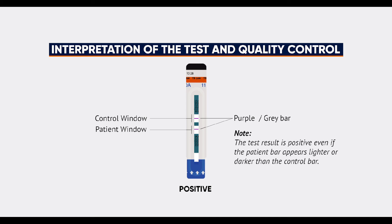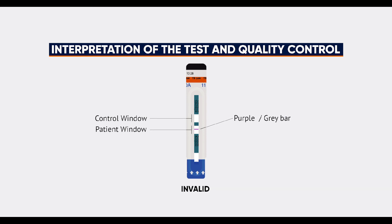Note: the test result is positive even if the patient bar appears lighter or darker than the control bar. If there is no purple or grey bar in the strip's control window, even if a purple or grey bar appears in the strip's patient window, the result is invalid and the test should be repeated.